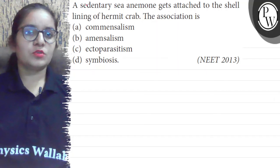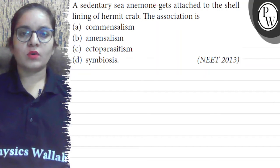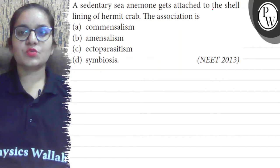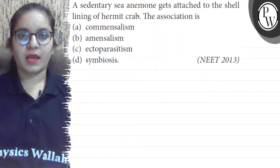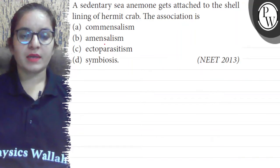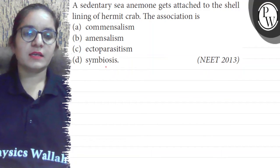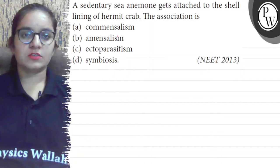Hello students, the question is: a sedentary sea anemone gets attached to the shell lining of a hermit crab. The association is: A. Commensalism, B. Amensalism, C. Ectoparasite, D. Mutualism (Symbiosis).